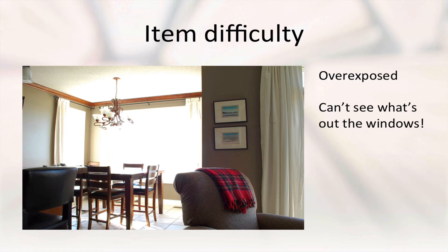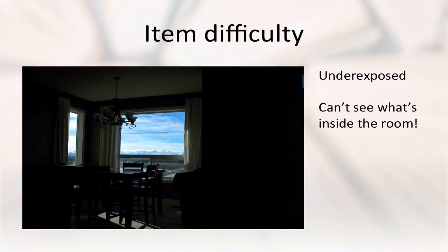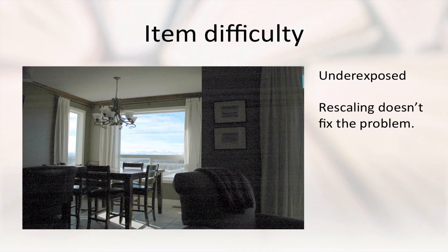To understand how, consider this photo. Because of the photographer's choice of exposure time, we can see many details for objects in the room. Through the windows, however, the photo is overexposed, and we see little. With a different choice of exposure time, we can arrange to see details for what's outside, but now the photo is underexposed for objects in the room. Worse, rescaling by adjusting the brightness of the photo doesn't fix this problem. Instead, areas that were under or overexposed originally become noisy, like on the wall here, for example.